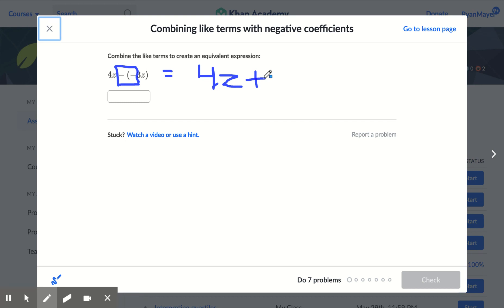Anytime I have two negative signs, two minus signs right next to each other, that means it's going to become a positive. And then I'm going to write that. So instead of having me say 4z minus a negative 3z, it really becomes 4z plus 3z. Anytime those two negatives are next to each other, it becomes a positive. So now I can just go ahead, do exactly what that sign is telling me. 4z plus 3z. I have 7z. And I'm done. Go to the next one.